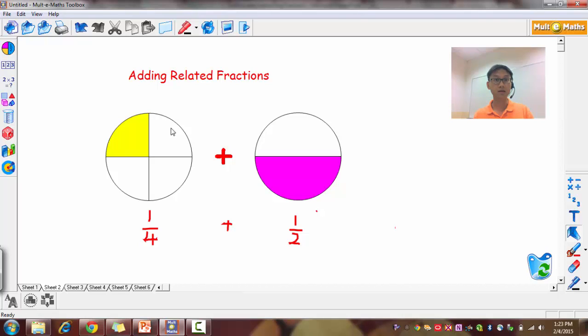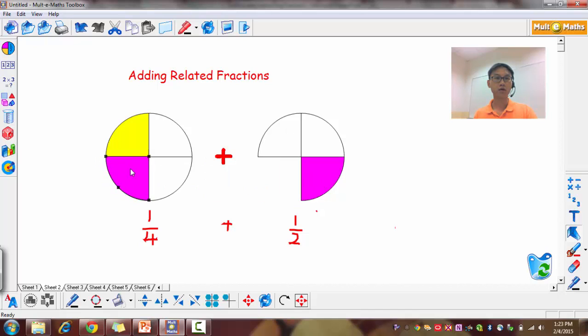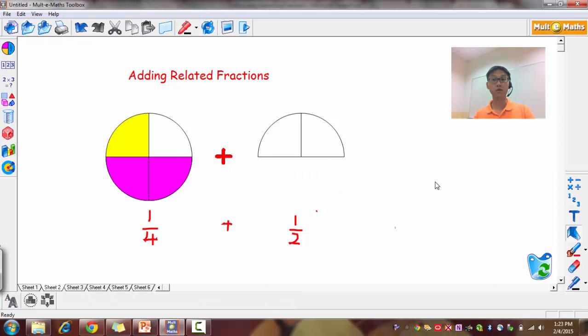It will look something like this. So now, instead of half, I have 2 out of 4, 2 quarters. And when I shift them over, what do you notice? Voila, I have 3 quarters. So let's see how do we work it out.